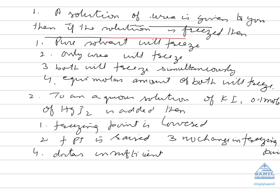Then if the solution is freezed, the crystals which will first appear will be of: number one, pure solvent; only urea; both will freeze; equimolar amount of the two will freeze. In this case it is the pure solvent which will freeze because the crystals which appear is of water only. The pure solvent always freezes first, so this is the correct answer.